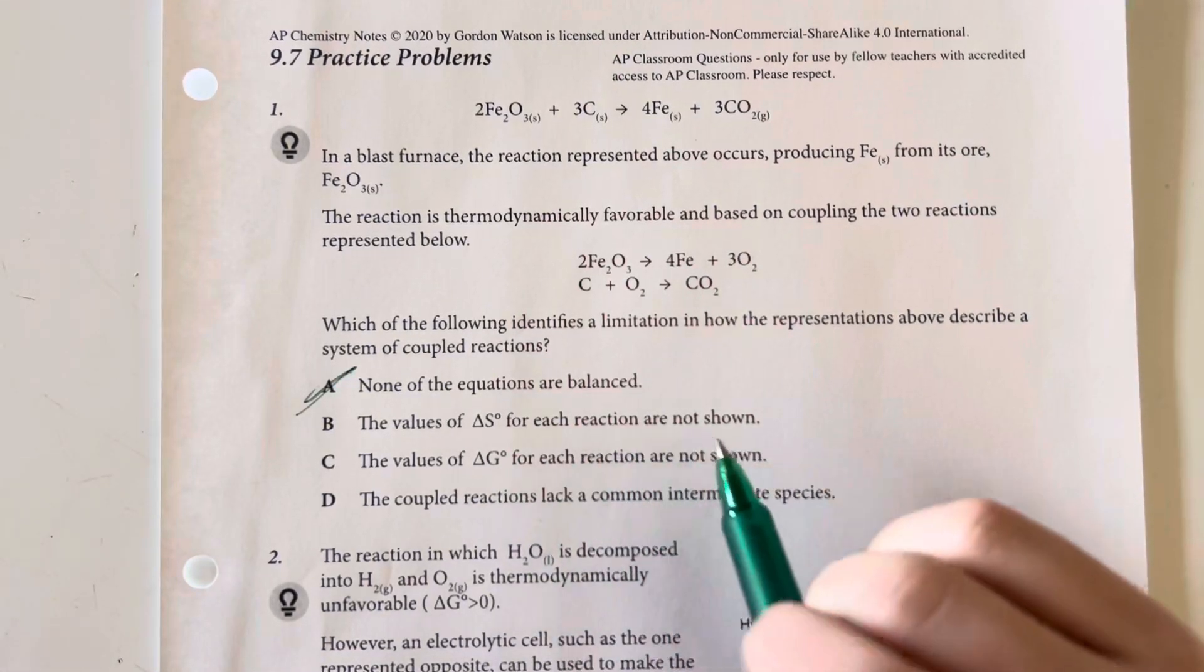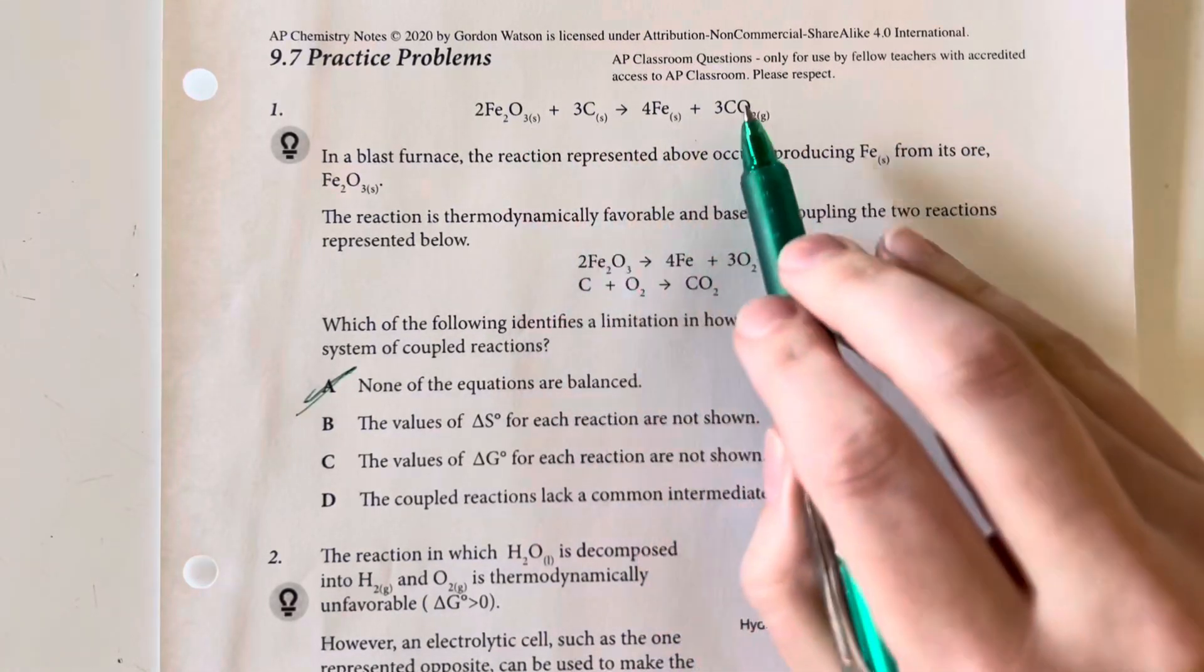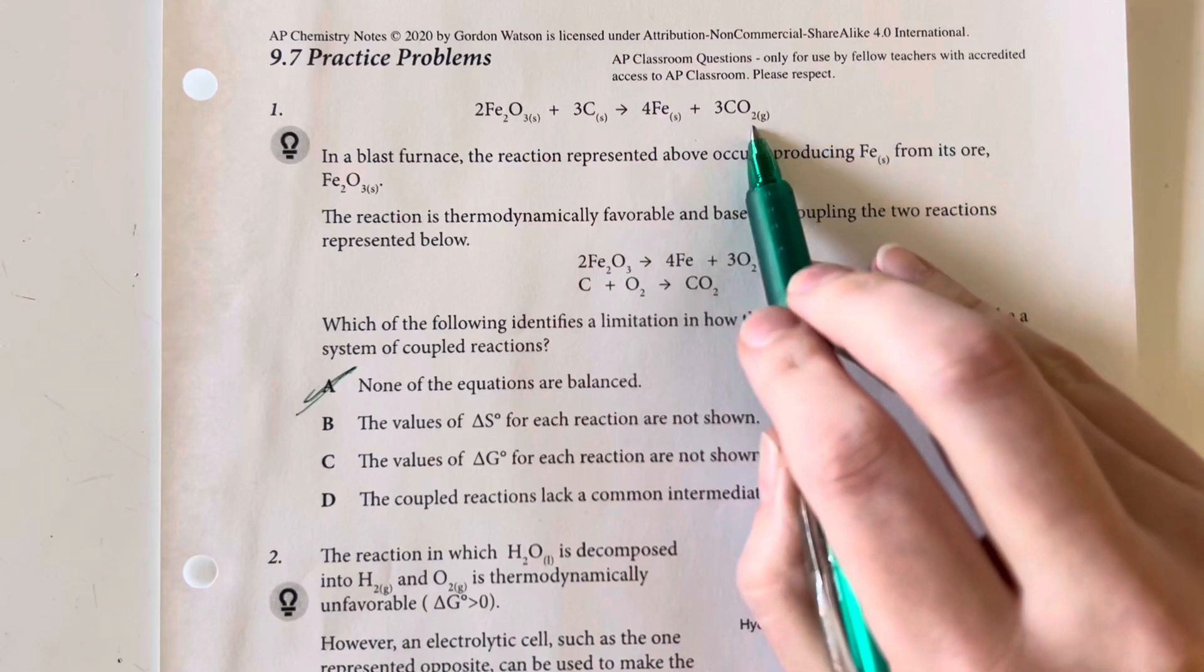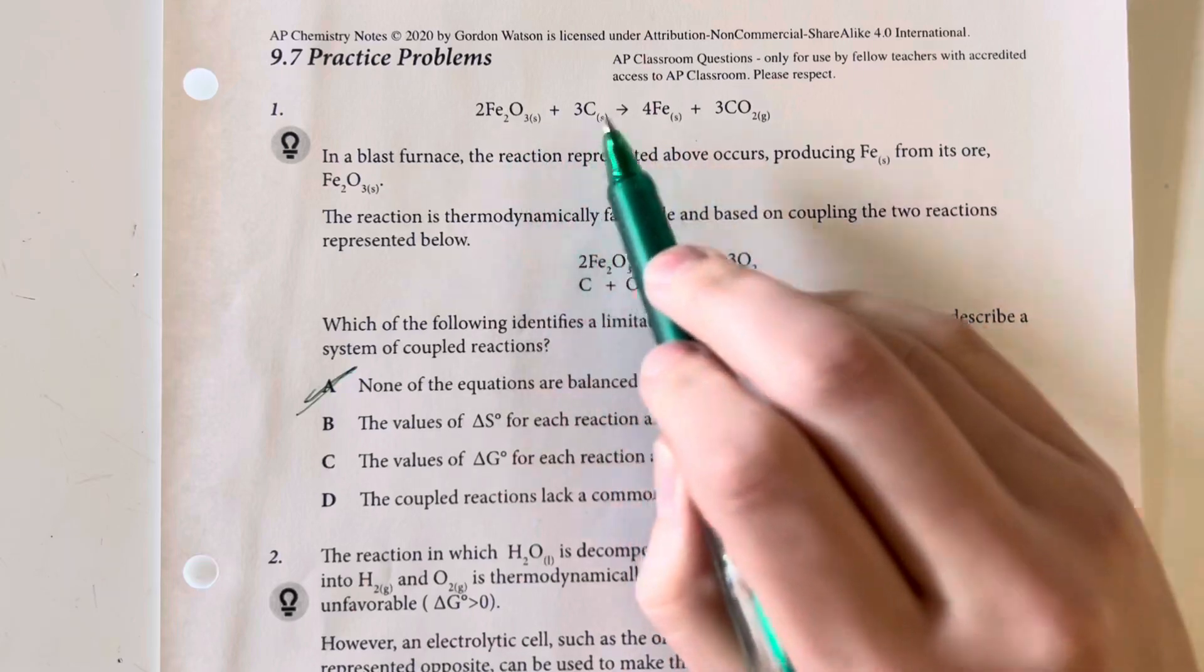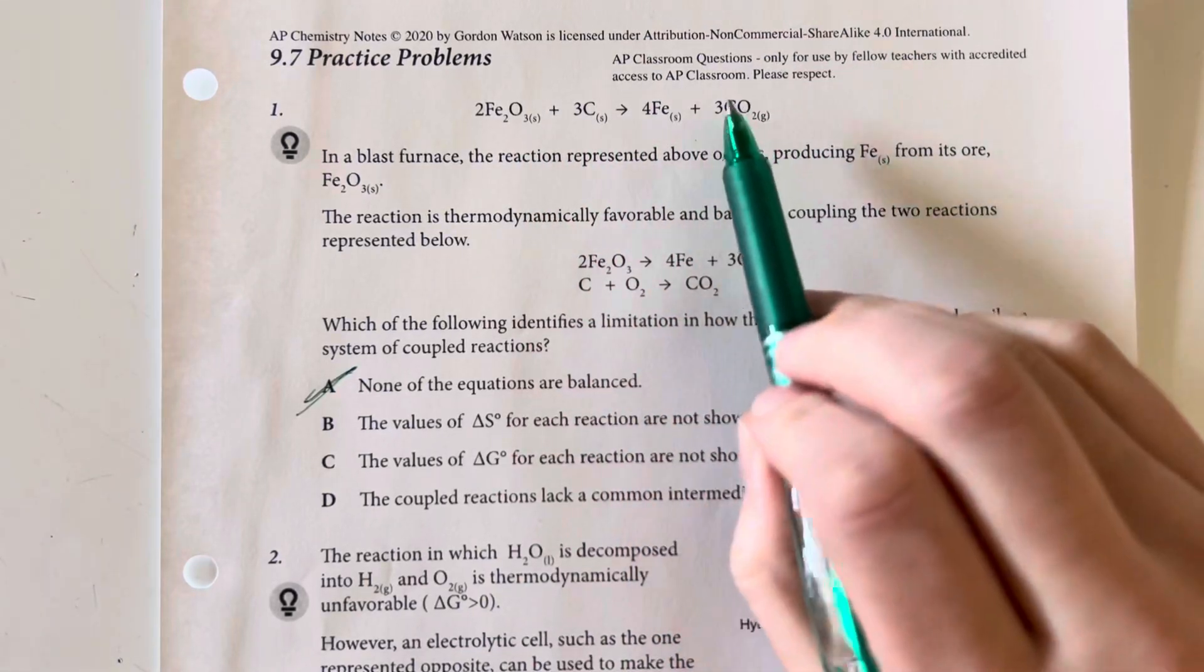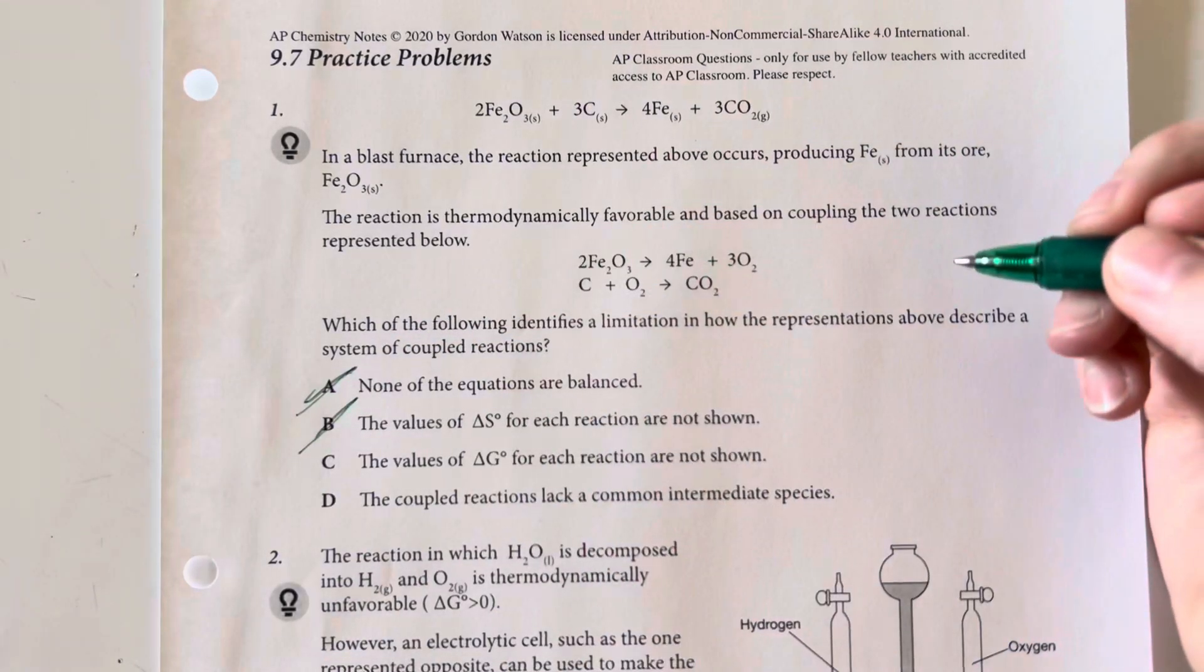The values for delta S not being shown, while not the most ideal, we can still derive that delta S is going to be positive, which is about all the information that we need here, because we are going from two solids to a solid and a gas, and therefore increasing entropy. So B is not going to be our best answer choice.